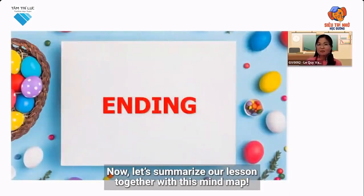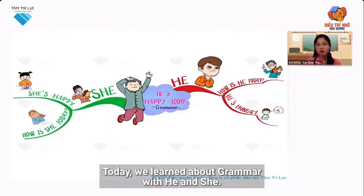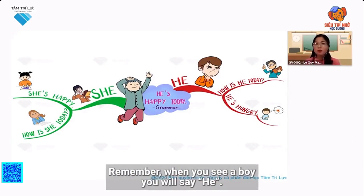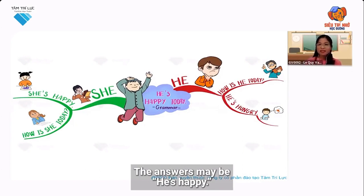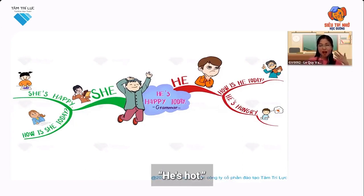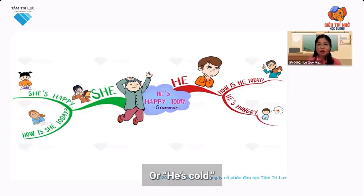Let's summarise our lesson together with this mind map. Today we learned about grammar with he and she. Remember when you see a boy, you will say he. The question is how is he today? The answer may be he's happy, he's hungry, or he's cold.